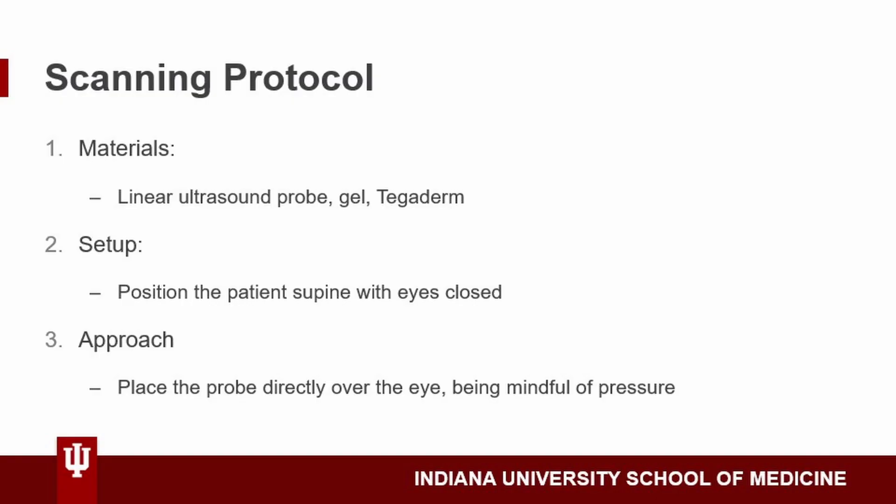So how do we actually go about scanning? First, we'll need a high frequency probe, ideally a linear probe. For this approach, we can use as much gel as possible in order to avoid unnecessary pressure on the eye. If available, you can also place a Tegaderm over the patient's eye to minimize any irritation. However, the gel can be placed directly onto a closed eyelid. For positioning, have the patient lie supine with their eyes closed and begin with the probe placed directly on the patient's eyelid, being mindful of how much pressure you're exerting.